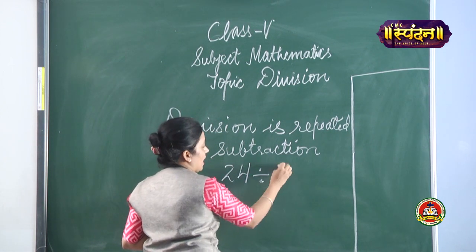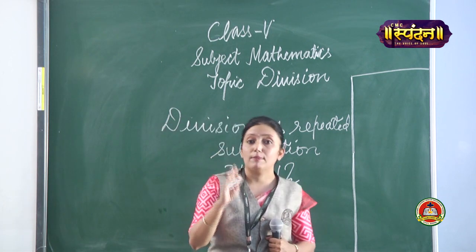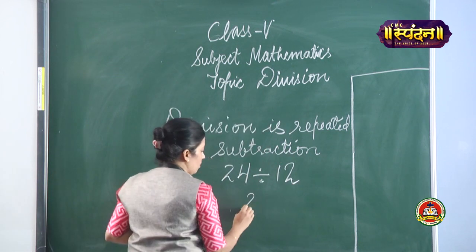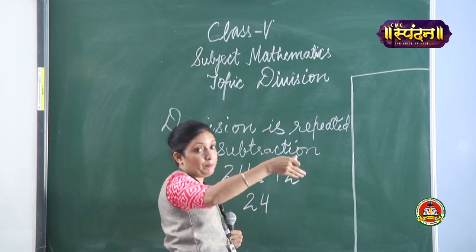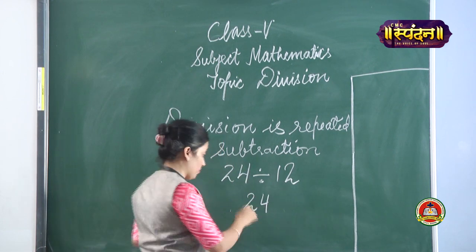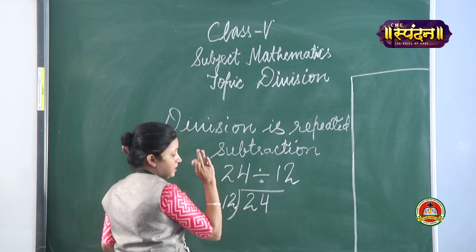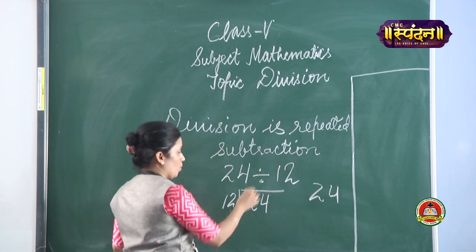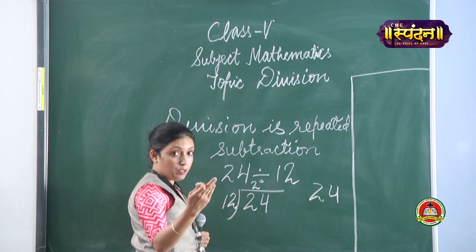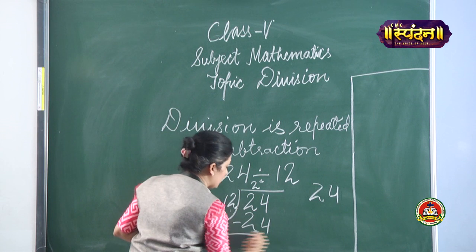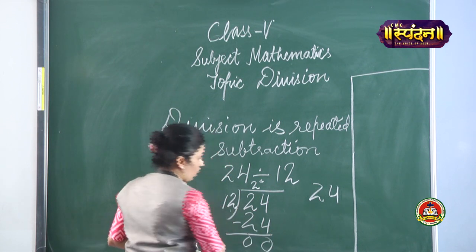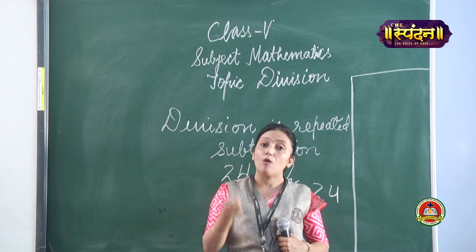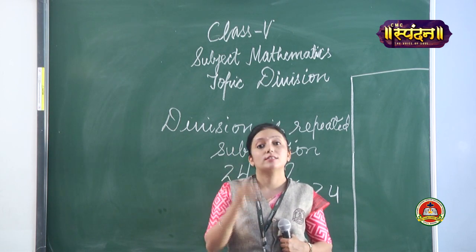Let us take 24 divided by 12. We know from the table of 12 that 12 twos are 24, so the answer is 2. But let us also see how this works using repeated subtraction.